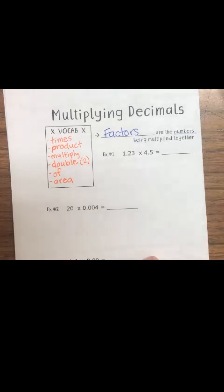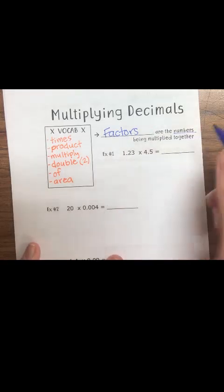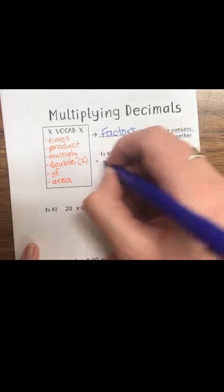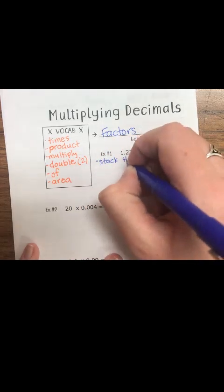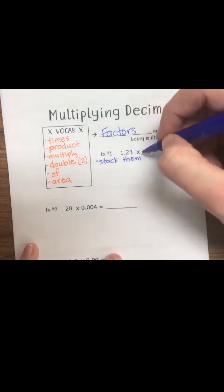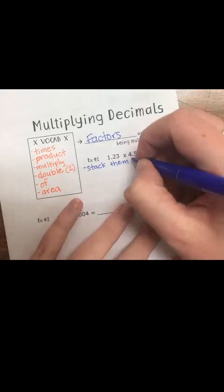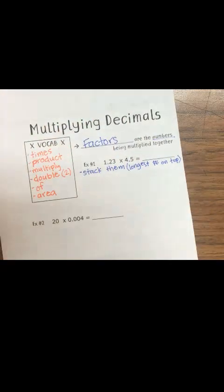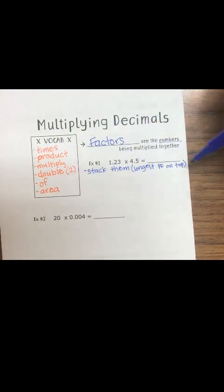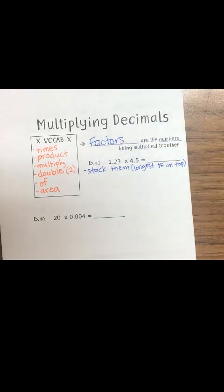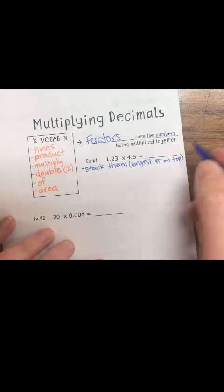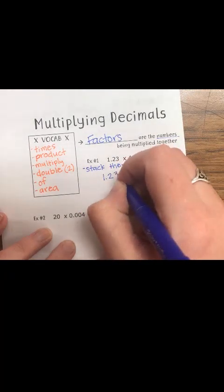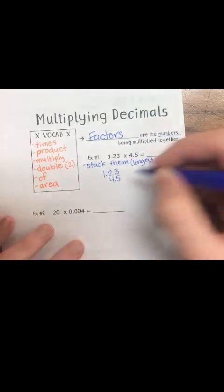The first problem is 1.23 times 4.5. How I line this up is I need to stack them. This one has three digits and this one has two, so I need to put the longest number on top. My longest number always goes on top, so I'm not going to put 4.5 on top because 1.23 is longer. I put 1.23 on top and then 4.5 below it.